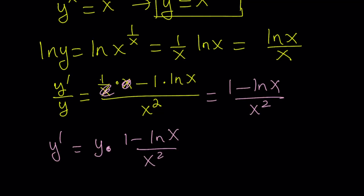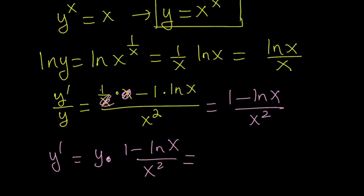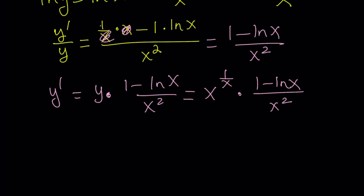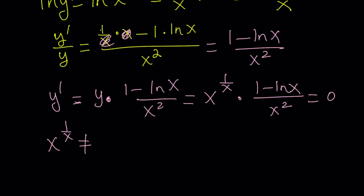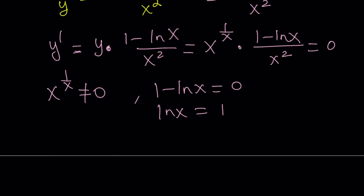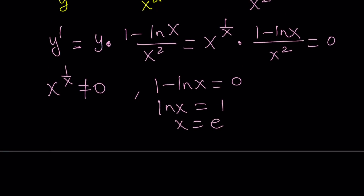If you multiply both sides by y, you get y prime equals y times (1 minus ln x) over x squared. But y equals x to the power 1 over x, so this becomes x to the power 1 over x, multiplied by (1 minus ln x) over x squared. As with most problems like this, we set the derivative equal to zero looking for a minimum or maximum. Since x to the power 1 over x cannot equal zero, we look for 1 minus ln x equals 0, which means ln x equals 1, which means x equals e, Euler's number.